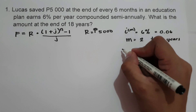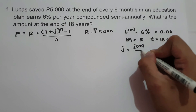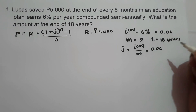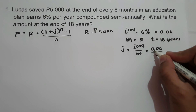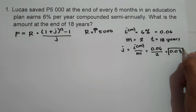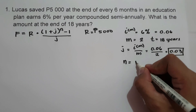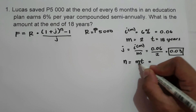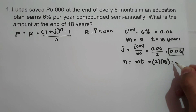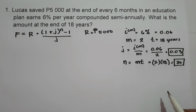Let us find the value of j using i raised to m over m. I raised to m is 0.06, and m is 2, so 0.06 divided by 2 gives j equals 0.03. Then let us find the value of n, which is m multiplied by time: 2 multiplied by 18 equals 36. So n equals 36.